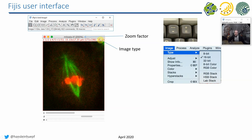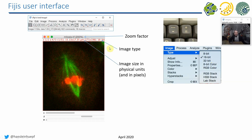You also see the image type — for example, a 16-bit image — and you can change it in the Image menu. When converting from 16 to 8-bit, you have information loss. For image subtraction, 32-bit is strongly recommended because 32-bit images allow negative values, while 8 and 16-bit do not. You can also see the physical size of the image in microns, the pixel dimensions in X and Y, the current channel (C), slice position, and the time point.